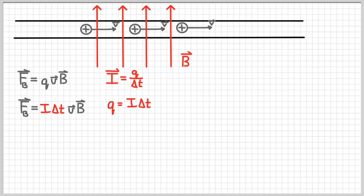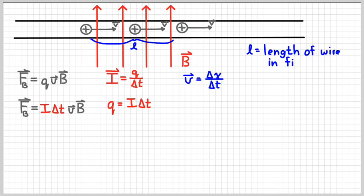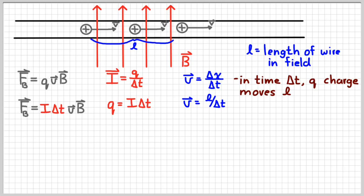Also remember that velocity can be expressed as displacement over time. So if we choose the displacement to be L, where L is the length of the wire that's actually in the field, we can write that equation like V equals L over delta T. And so in time delta T, we would have Q number of charges moving through that distance L.